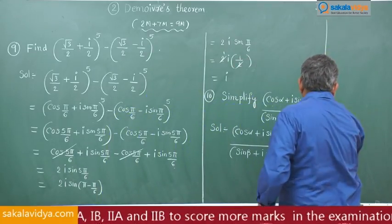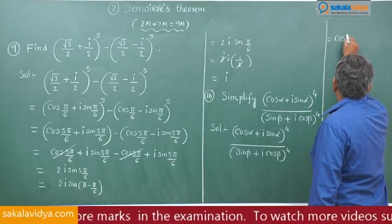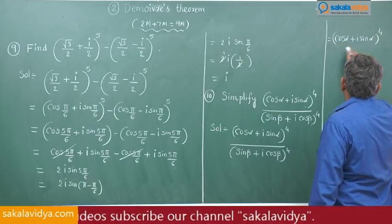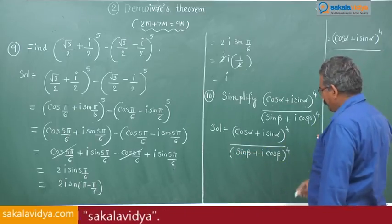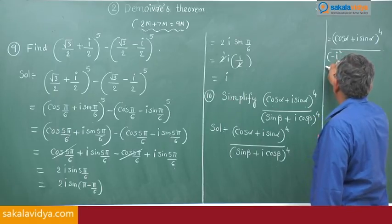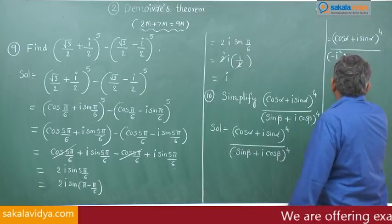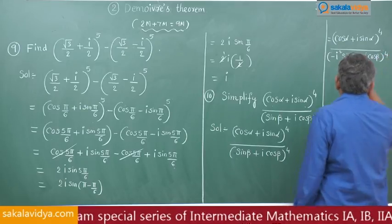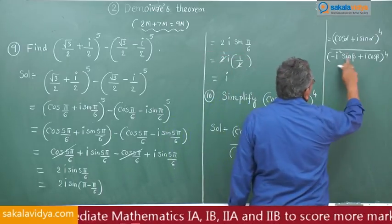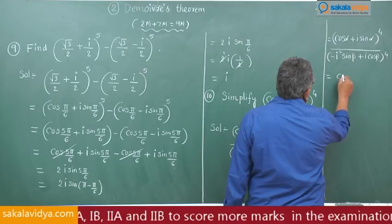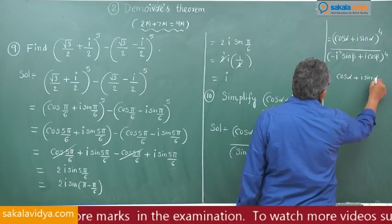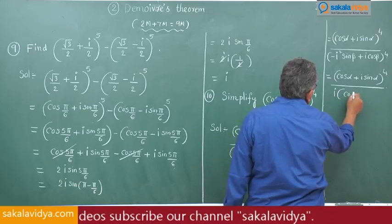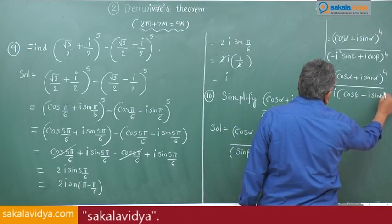We write the expression as (cos α + i sin α)^4 divided by the denominator. Instead of 1 we write −i² (since i² = −1, so −i² = +1), giving (sin β + i cos β)^4 = i^4(cos β − i sin β)^4, after taking i as a common factor out of the denominator.